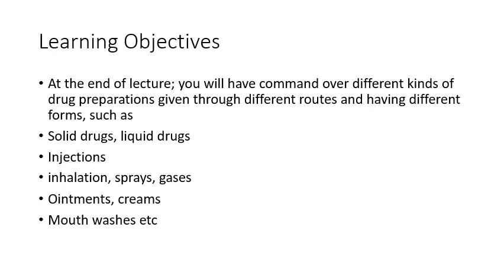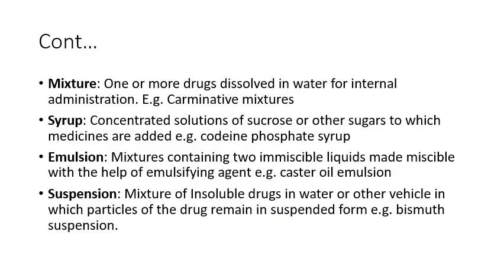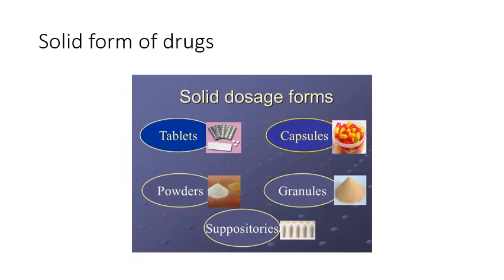We will also cover drugs which are applied over the skin such as ointments and creams, and drugs which are absorbed or applied over the mucous membranes like mouthwash and gargles. These are some liquid forms of drugs — you can see the syrup here, elixir here, and suspension. Codeine phosphate syrup is also used for linctus, which is used for cough. Linctus and syrups have different purposes; syrup has a wide range of purposes but linctus is usually used for cough.